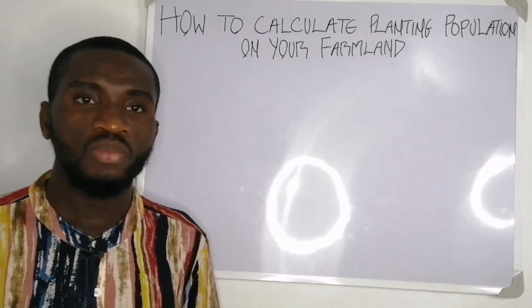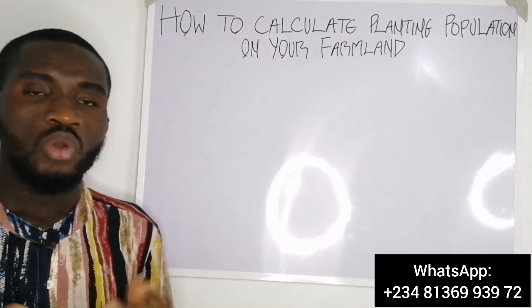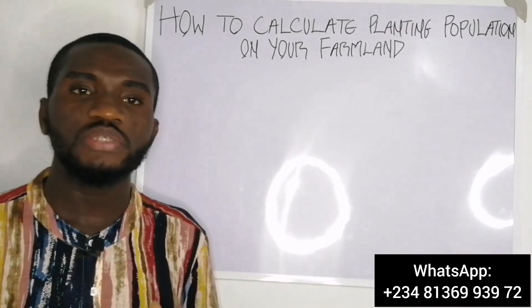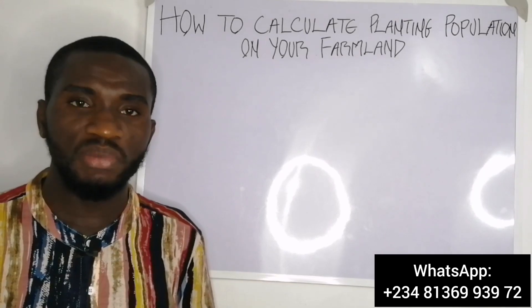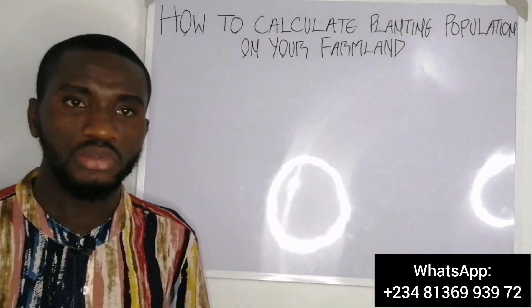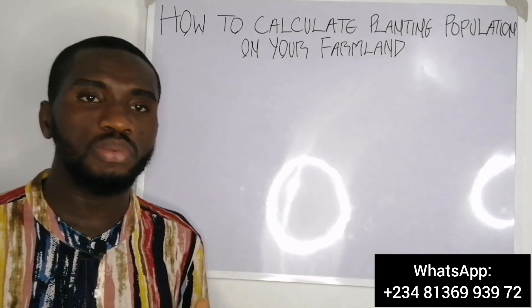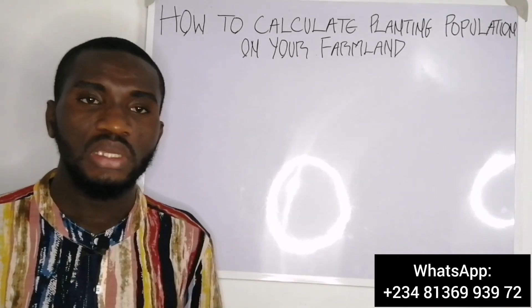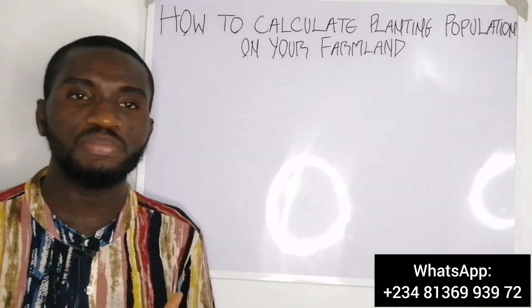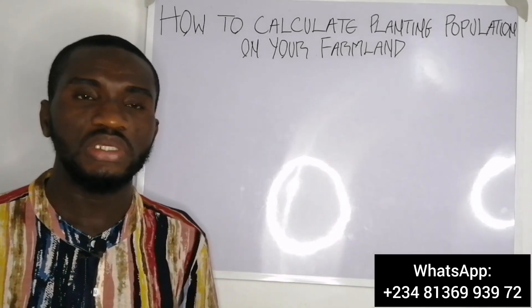On today's episode, I'm going to be looking at how to calculate planting population on your farmland. One of the major factors causing low yield, especially among African farmers, is the problem of planting population. The majority of farmers plant less than the optimum population on their farmland, and in some cases they plant more than the normal population.